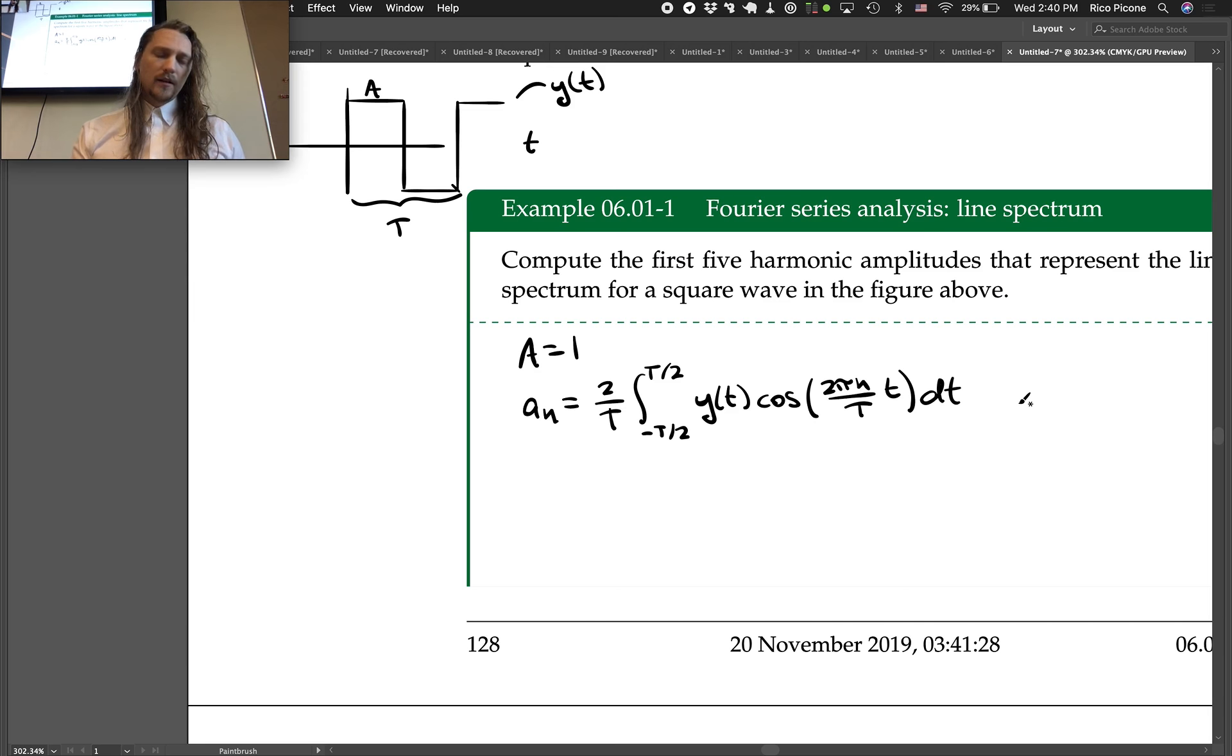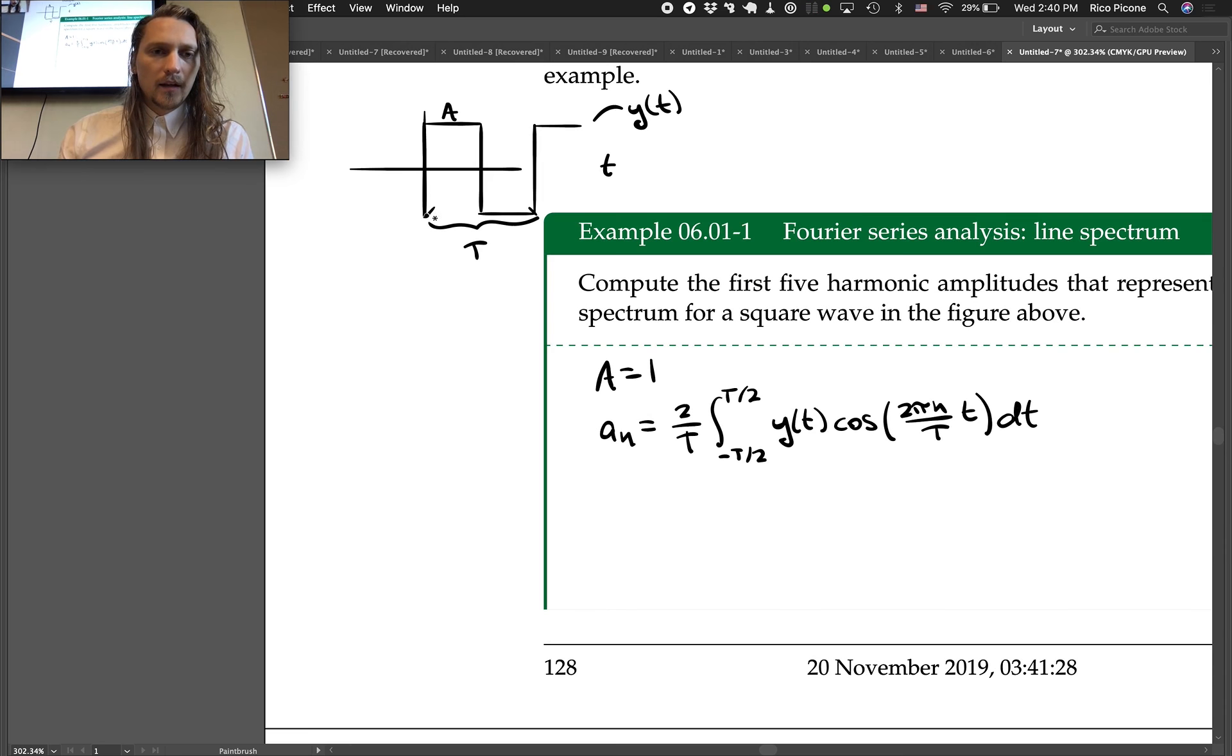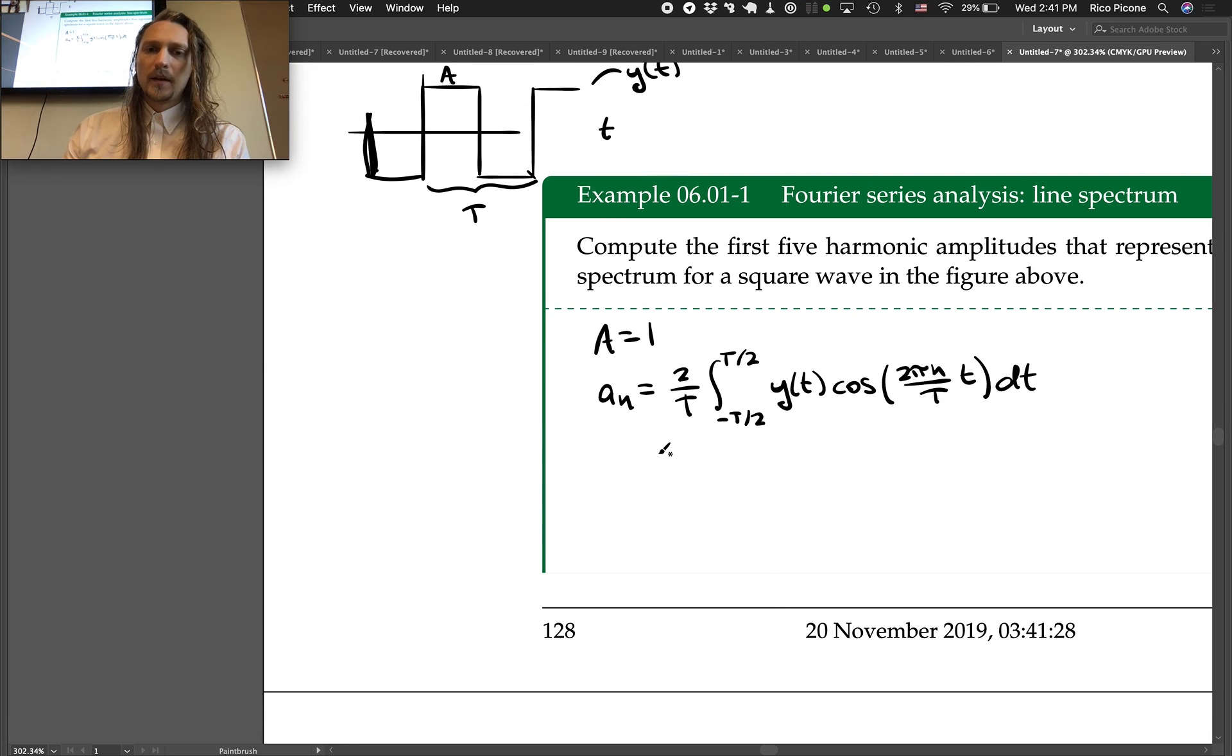Okay, so if we look at the negative t over 2 integral here, that's back to this point, right? So in this region, y of t is negative a or negative 1, we say a equal to 1. So we could just do two integrals, one from negative t over 2 to 0, and the other one from 0 to t over 2. That would be nice.